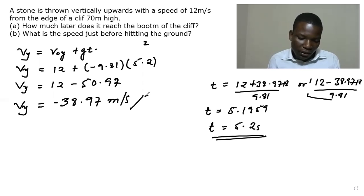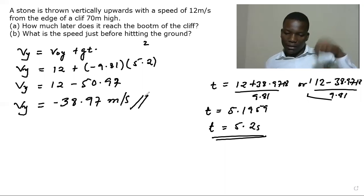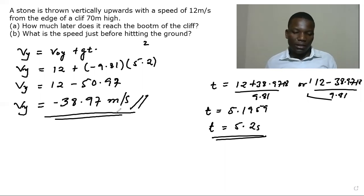And this makes sense because the final velocity is going to be found when this stone is pointing downwards. So taking downwards to be negative and y to be positive, this makes sense. So this is going to be the velocity before hitting the ground.